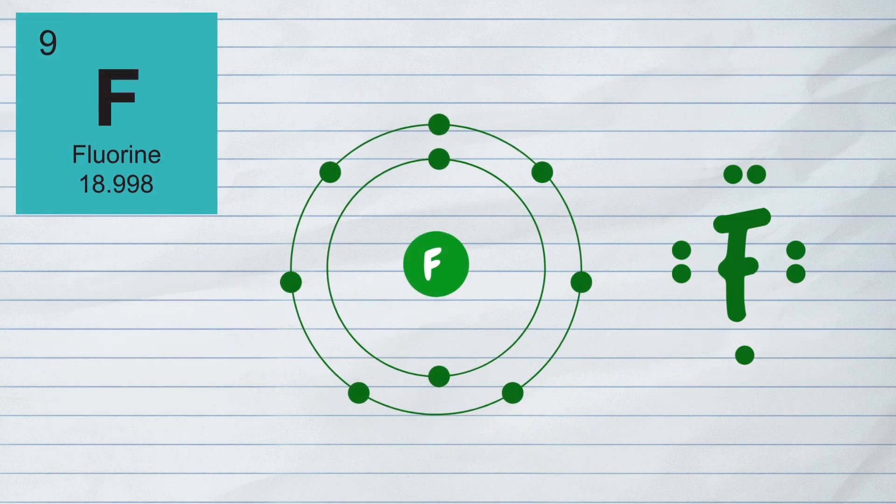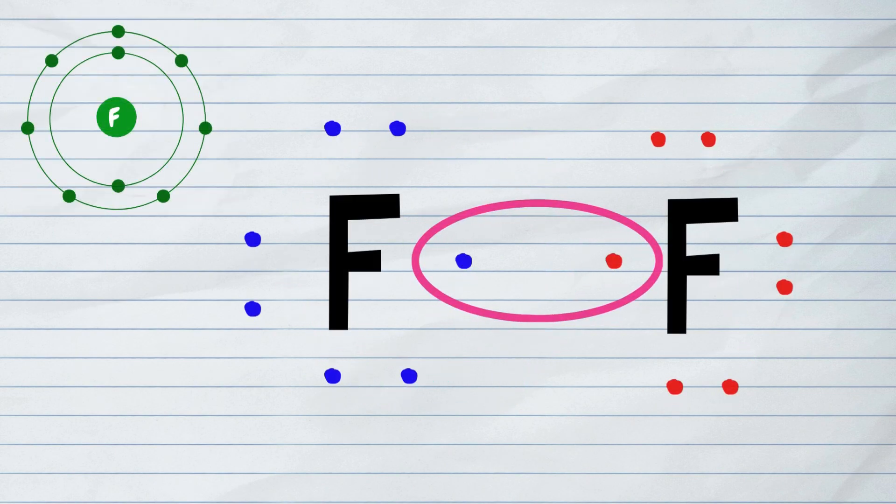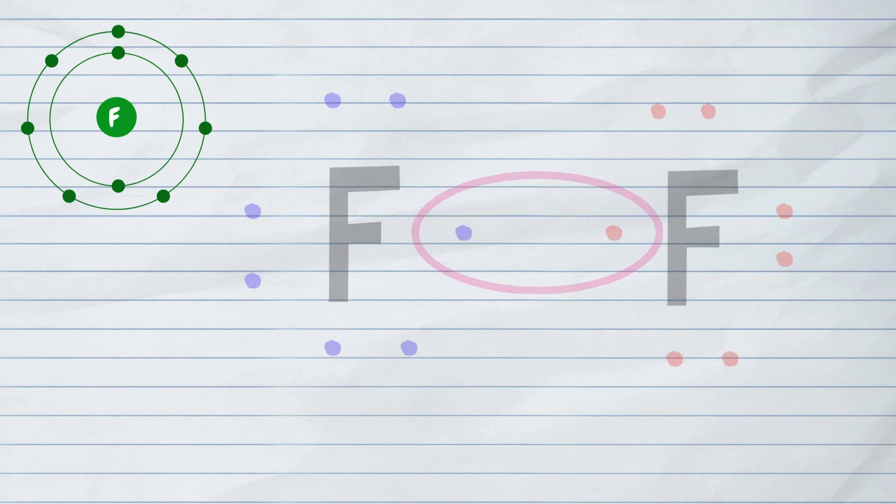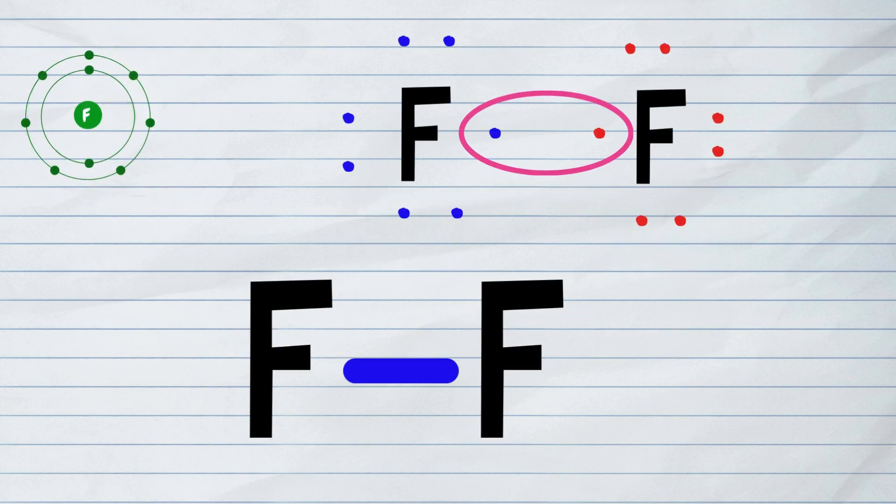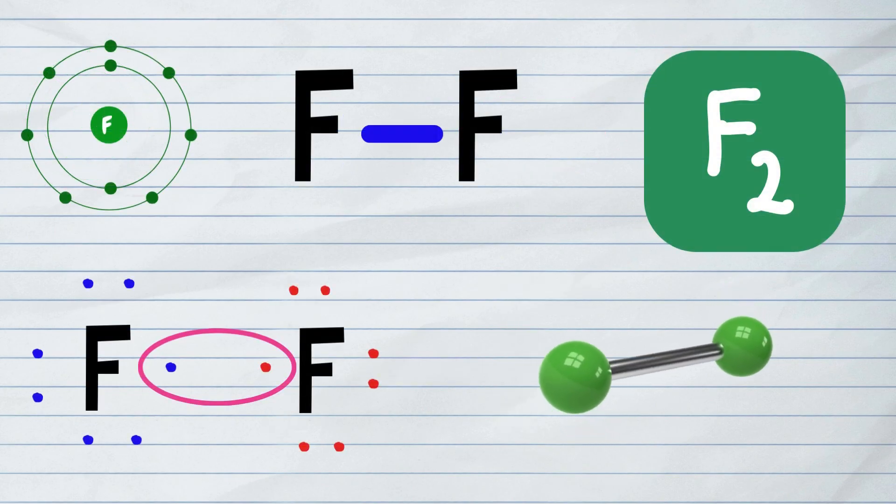Fluorine has seven valence electrons, and two fluorine atoms will share one of their seven valence electrons to form a single covalent bond, thus forming a stable F2 molecule.